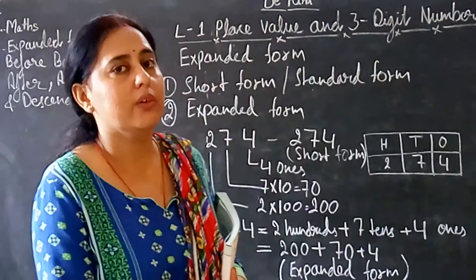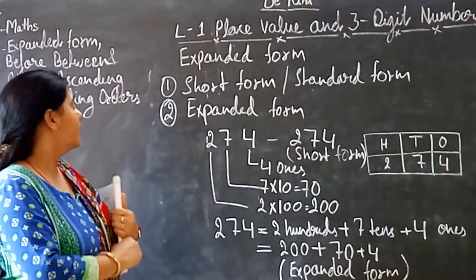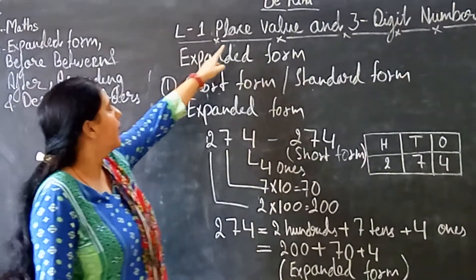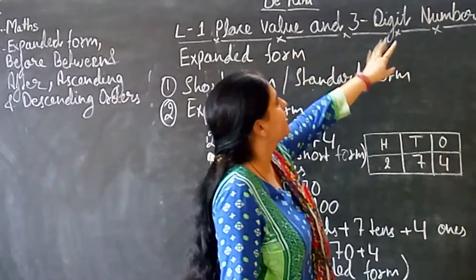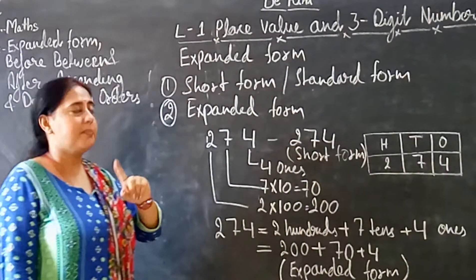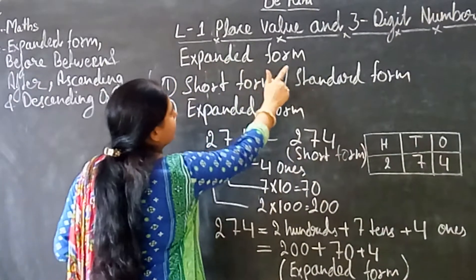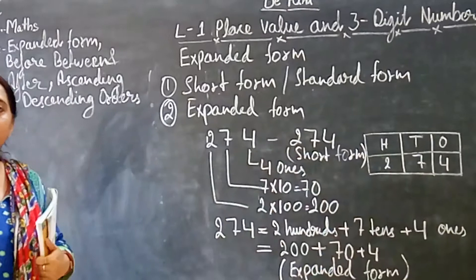Today we are taking another topic of lesson 1. What was your lesson 1? Place value and 3 digit numbers. Now today we are taking expanded form of the 3 digit numbers. Got it?